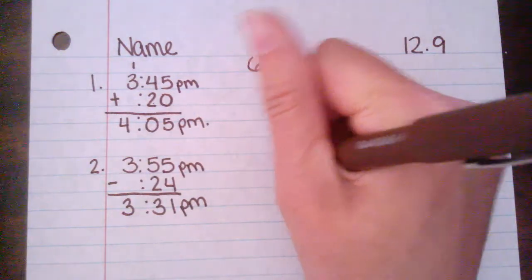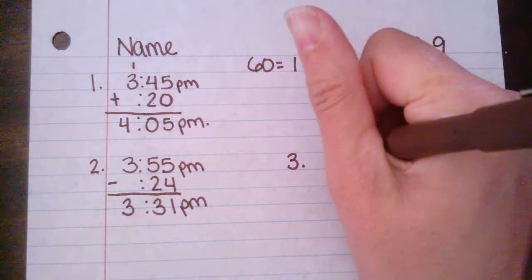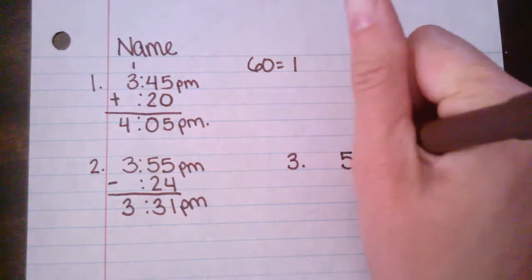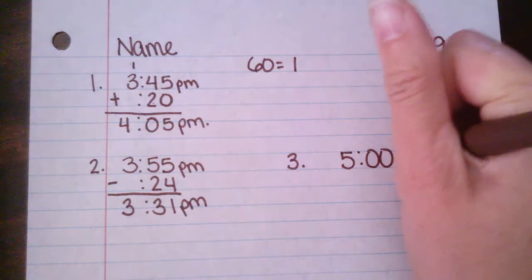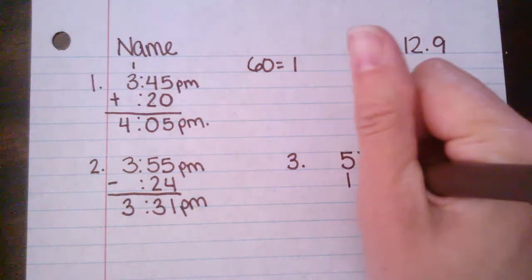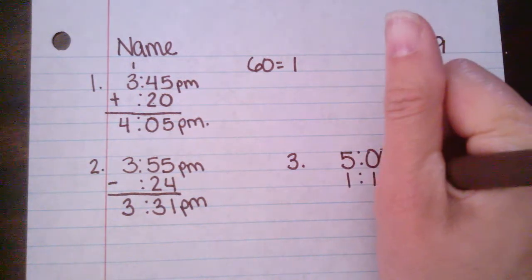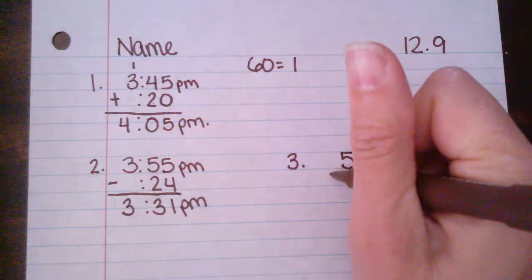Let's try out number three. Amy's karate class lasted one hour and 15 minutes and it's over at five o'clock. What time does it start? So we know that the end time is 5 o'clock p.m. And we know that her class lasts one hour and 15 minutes. Now we need to subtract that.